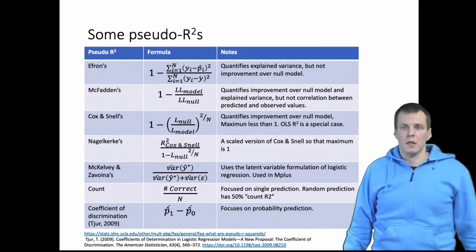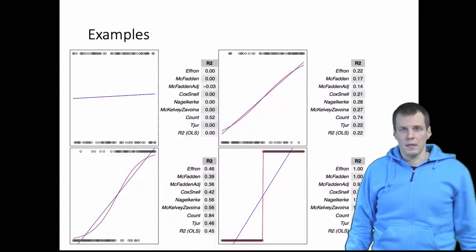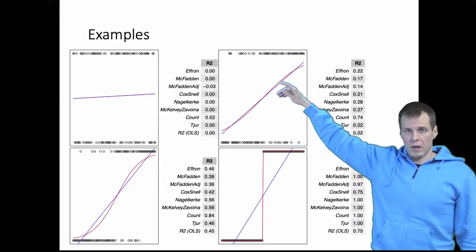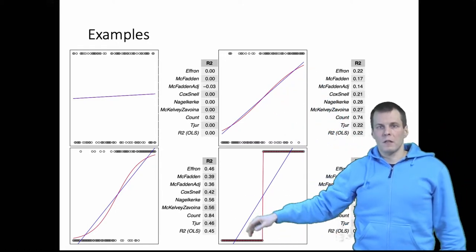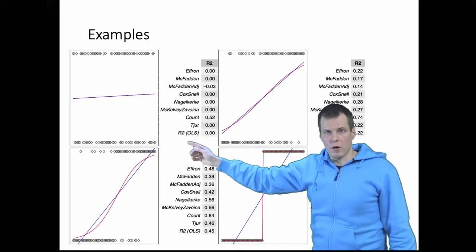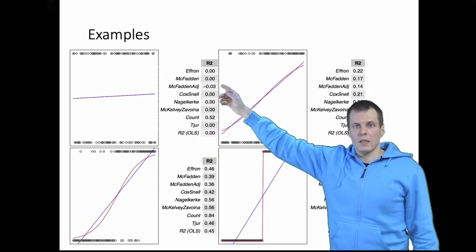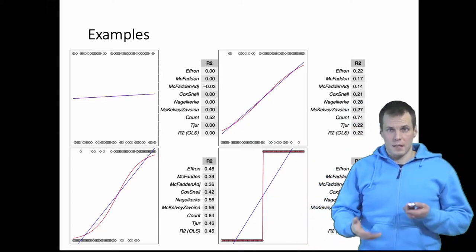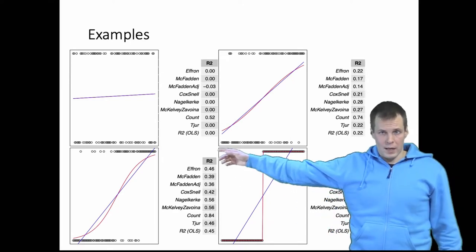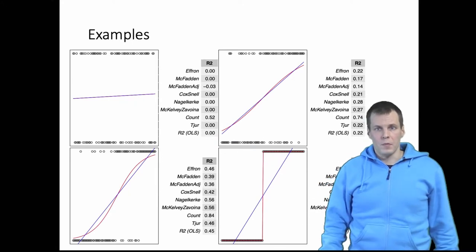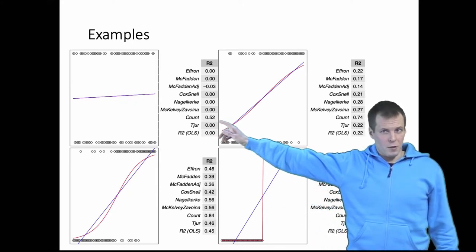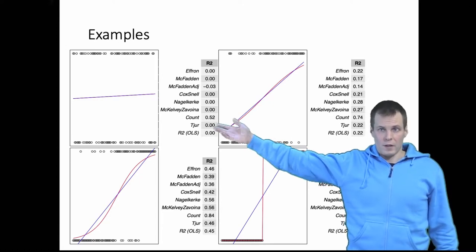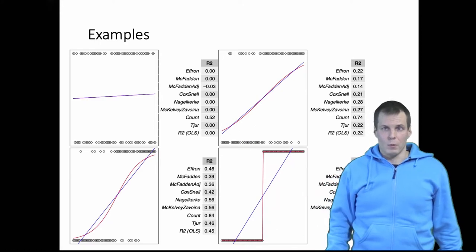Let's look at examples, because these statistics are quite different. We have some datasets where the blue line is a linear regression model and the red line is logistic regression. In the first scenario the model doesn't explain the data at all — R squared in OLS is zero and all pseudo R squares are close to zero, except the adjusted McFadden's which is negative. Importantly, the count R squared is 52%, so even though the model explains nothing, we get half the predictions correct by chance.